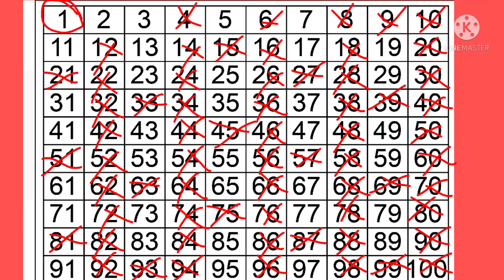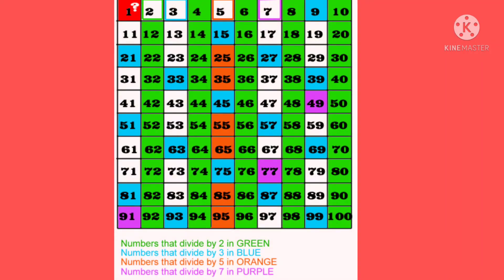And the last step, cross out all the multiples of 5 and 7 except 5 and 7. After following this procedure, we find the prime numbers between 1 to 100.